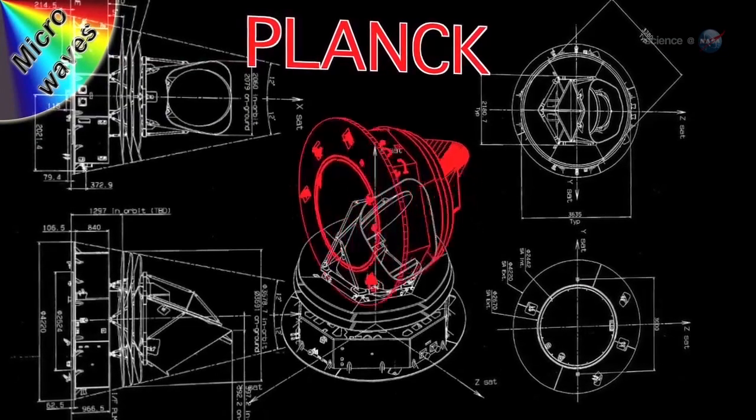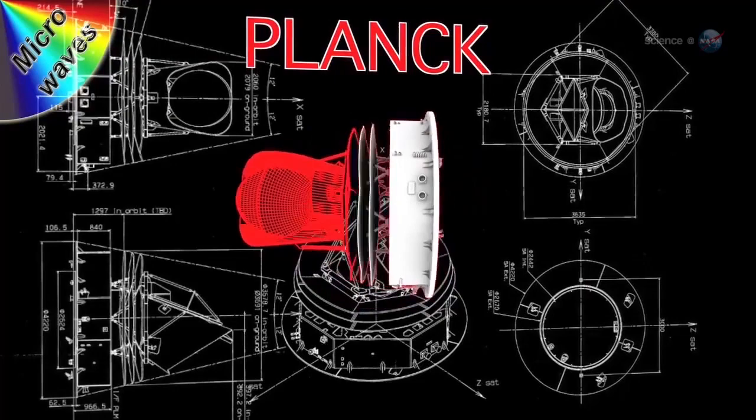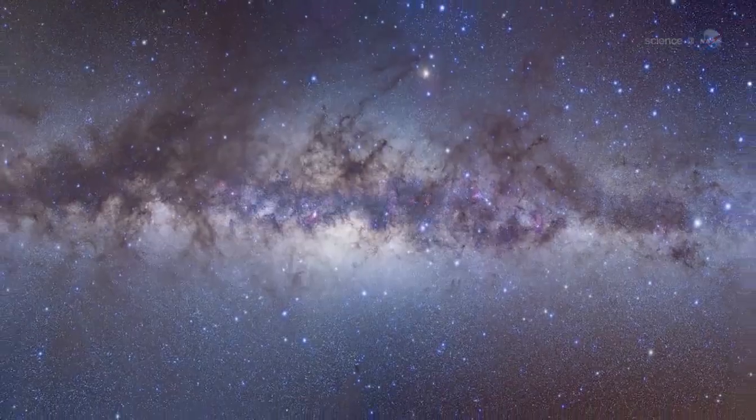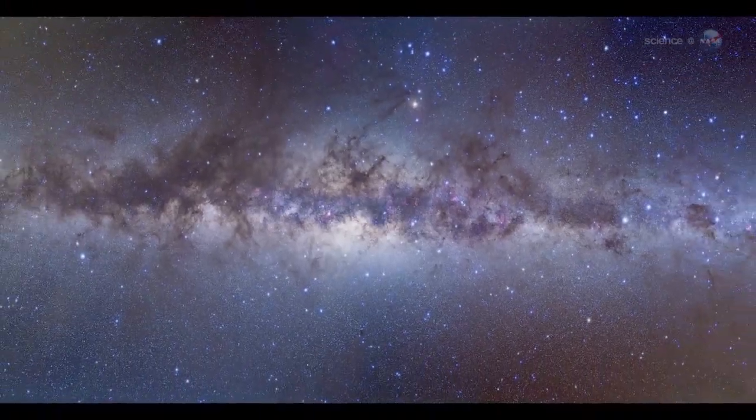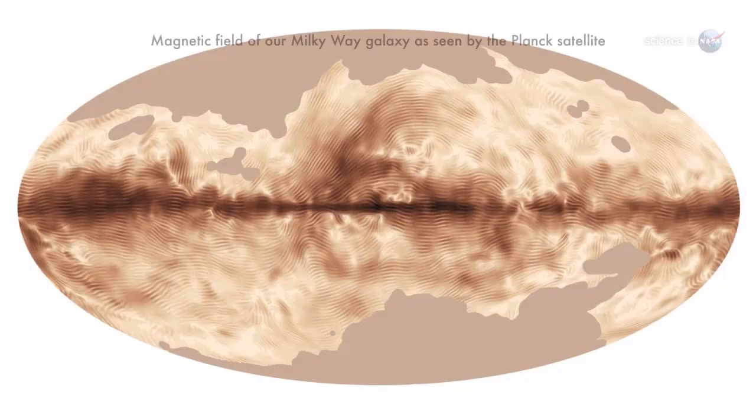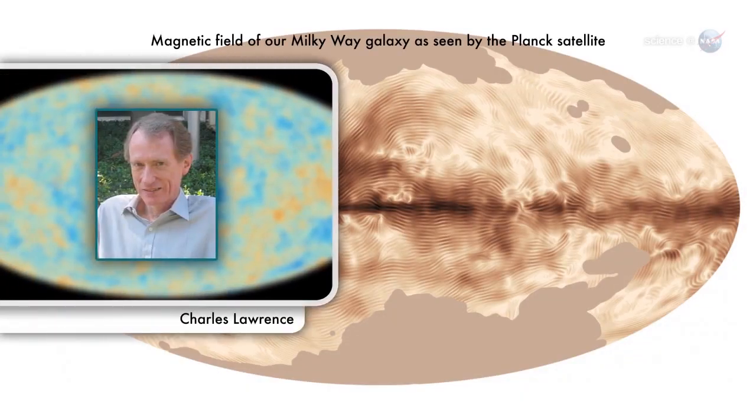Researchers working with data from the European Space Agency's Planck spacecraft have mapped the magnetic field of the entire galaxy. The Milky Way's magnetic field stretches across more than 100,000 light-years.